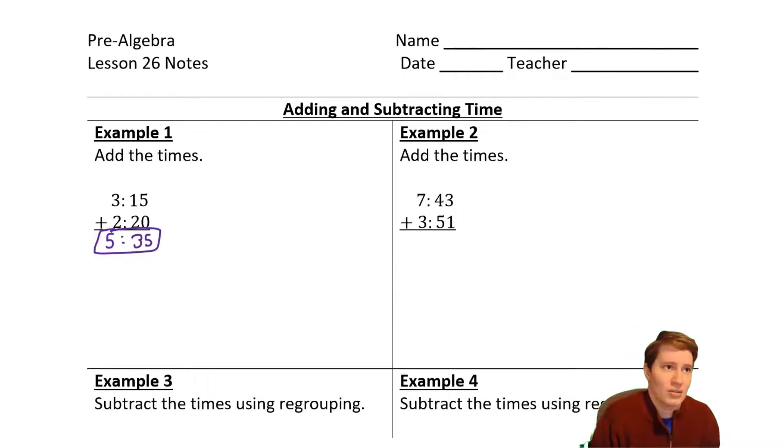It's not talking about like 3:15 PM plus two hours and 20 minutes, because they didn't use AM or PM. It's just saying this many hours and minutes plus this many hours and minutes is how many hours and minutes. So let's do the second one.